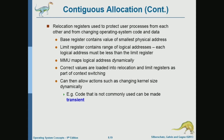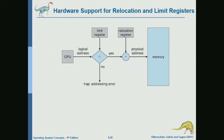With contiguous memory allocation, each program has one block of memory, defined by a base register and a limit register, and the memory management unit does the mapping. We have a mapping scheme between logical addresses and physical addresses. What gets generated by the CPU is a logical address, and we compare that value — which is an offset — relative to the limit register.